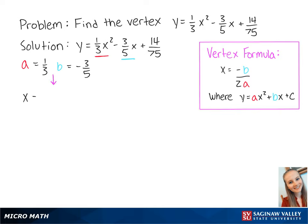We can plug these numbers into the formula to give us x equals negative three-fifths over two times one-third, which is equal to three-fifths times three-halves, which is equal to nine over ten.